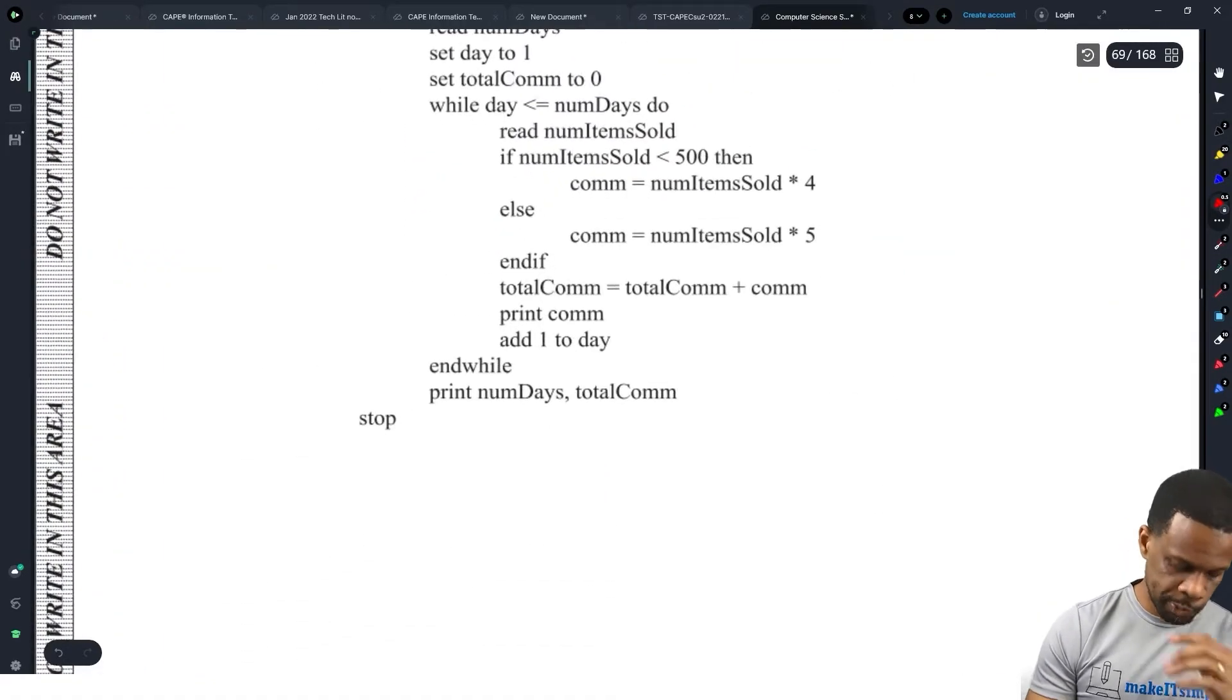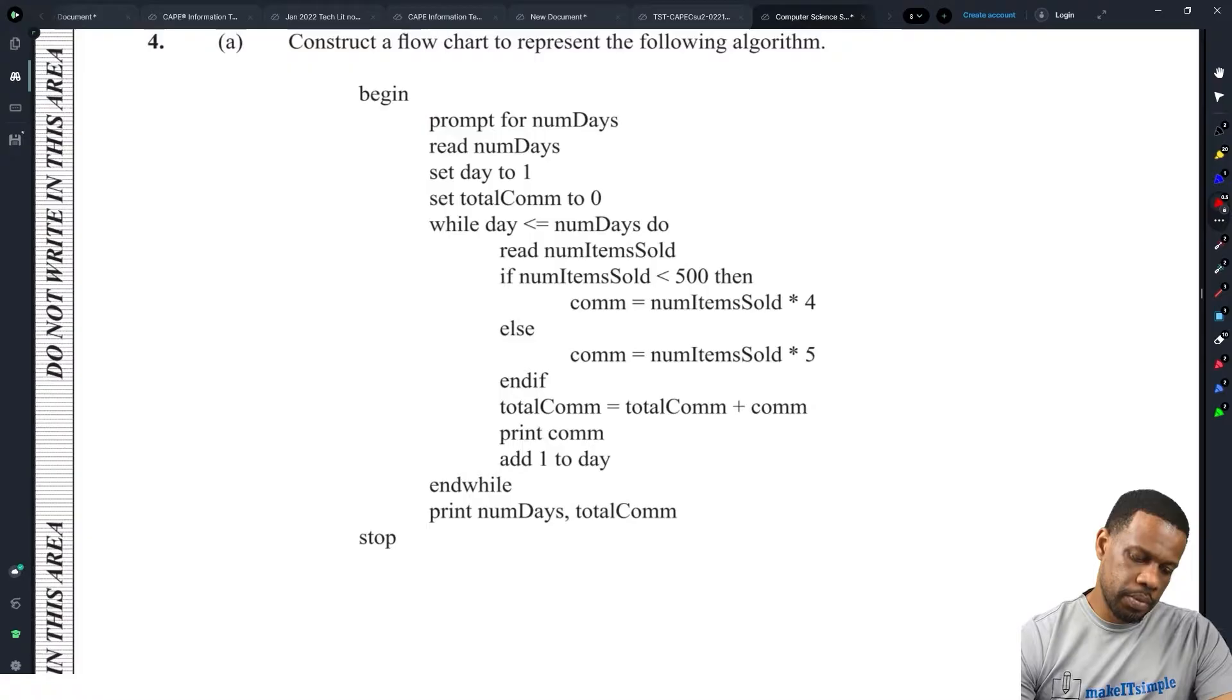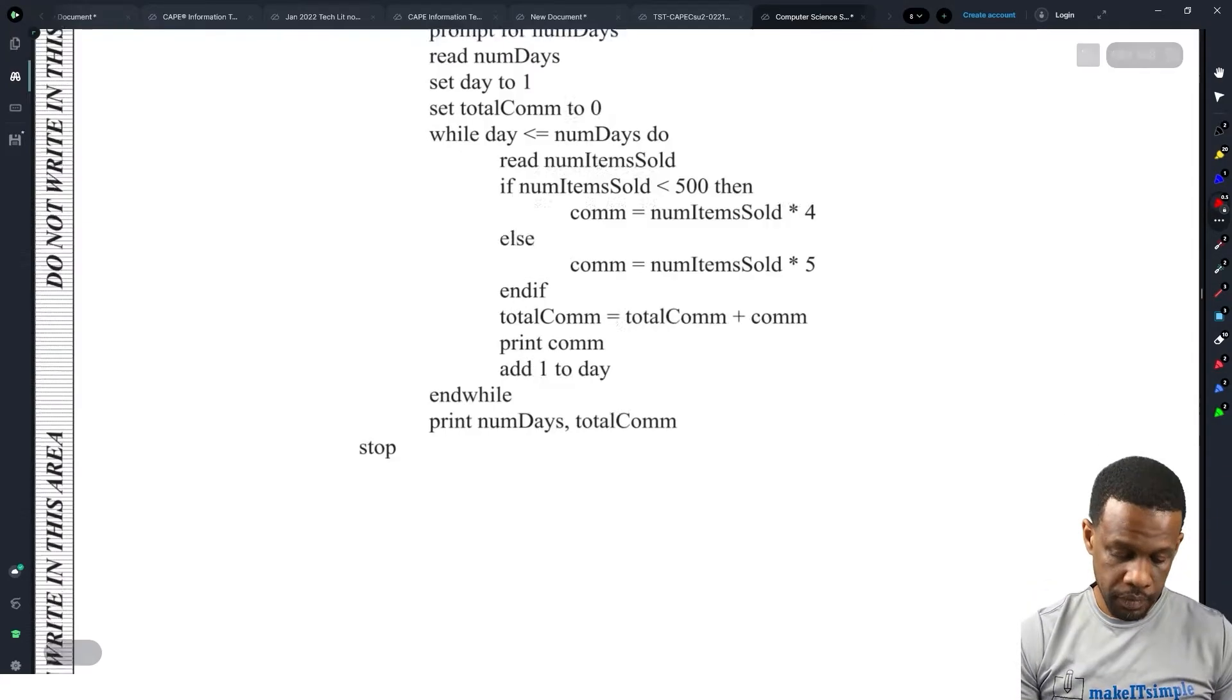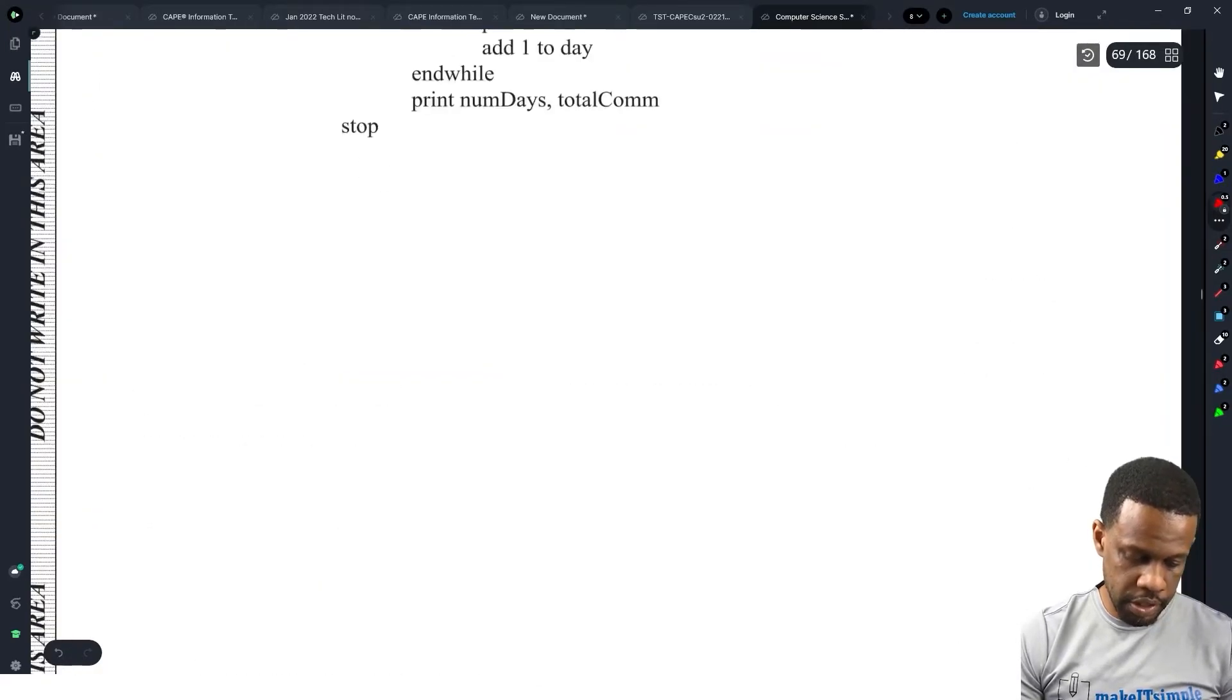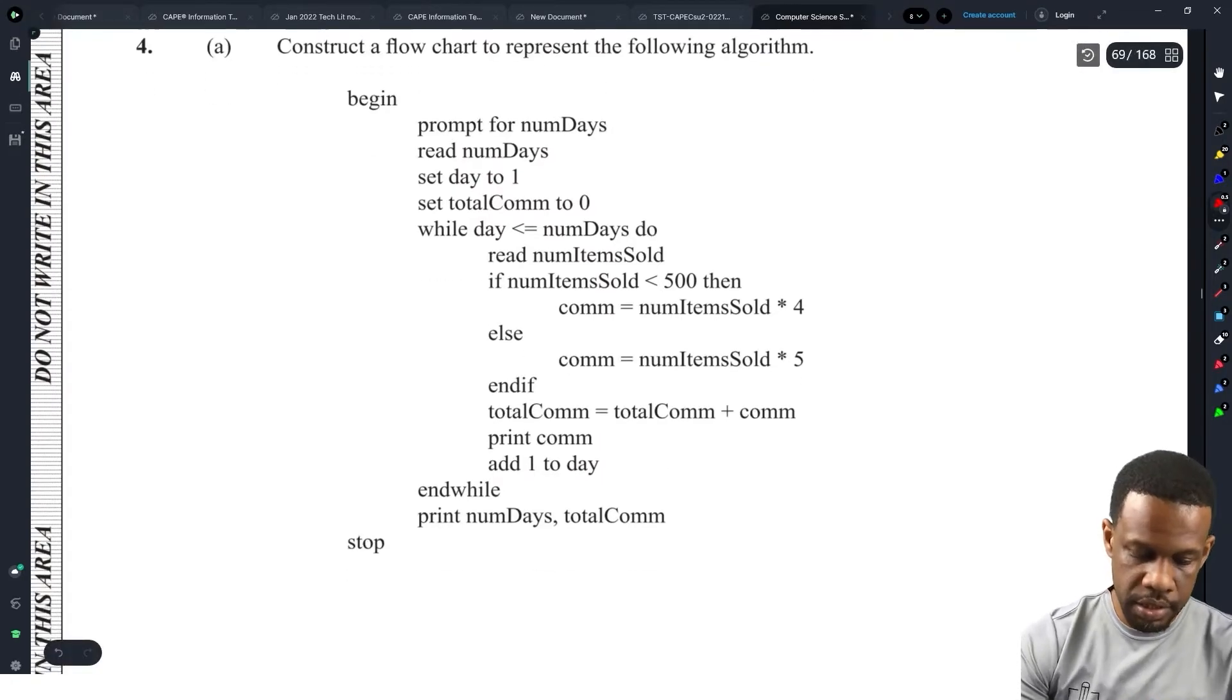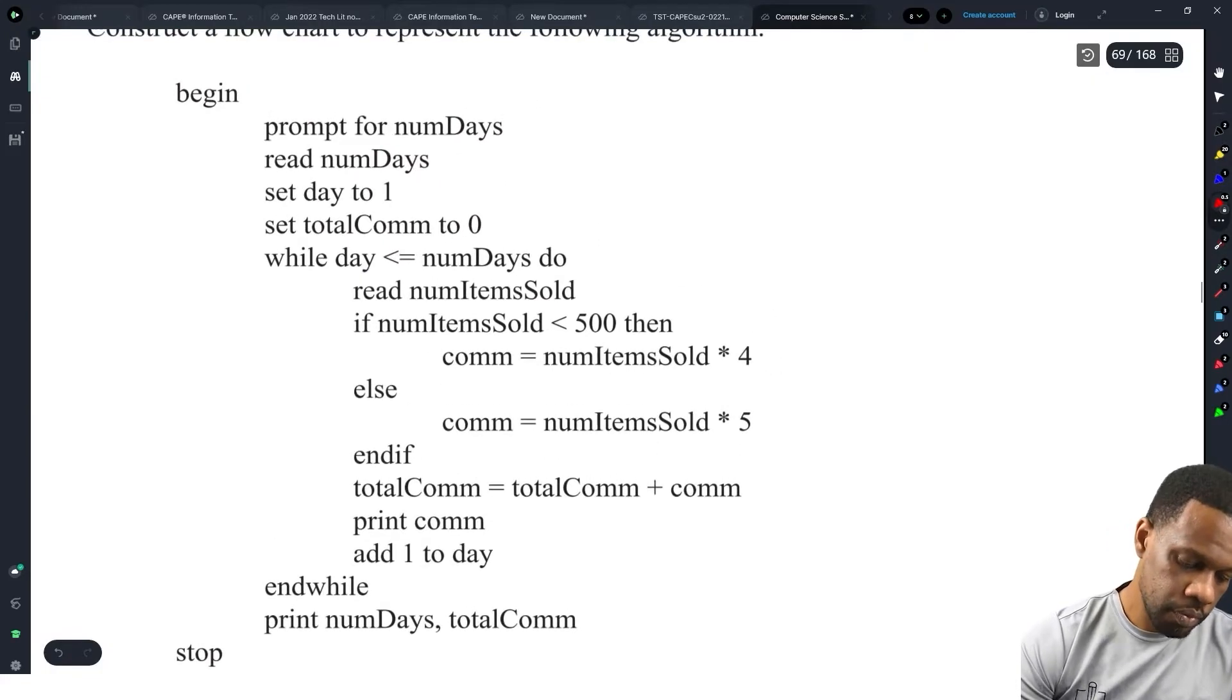Number four. Alright. Construct a flow chart to represent the following algorithm. So prompting the number of days, read number of days, set day to one, set total, come to zero. While day is less than or equal to number of days. All we have to do is just show the flow chart for it. Match the words to the shape, which is literally what our flow chart requires you to do.